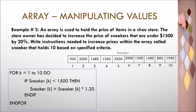If this condition is true, the value at the current location will be increased by twenty percent. This is done by multiplying the value by 1.20. The updated or new price is then stored back to the current location of the array. Once this is done, the if statement terminates and the for loop continues by moving the index to the next location for evaluation.